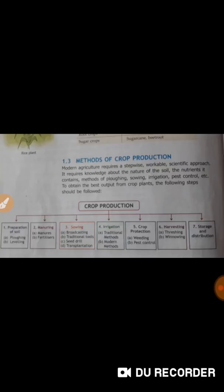We were done with the definition of agriculture, the specialized branches of agriculture. Our next topic is methods of crop production. Methods of crop production involve different steps but nowadays we don't go for the conventional methods.